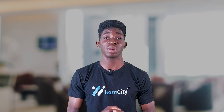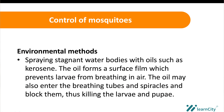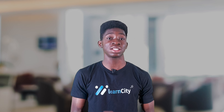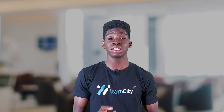Another method is spraying stagnant water bodies with oils such as kerosene. The oil forms a surface film over the water that prevents larvae from breathing air, and can also enter the breathing tubes and spiracles of the larvae and block them. This kills the larvae and pupae, controlling mosquito breeding.